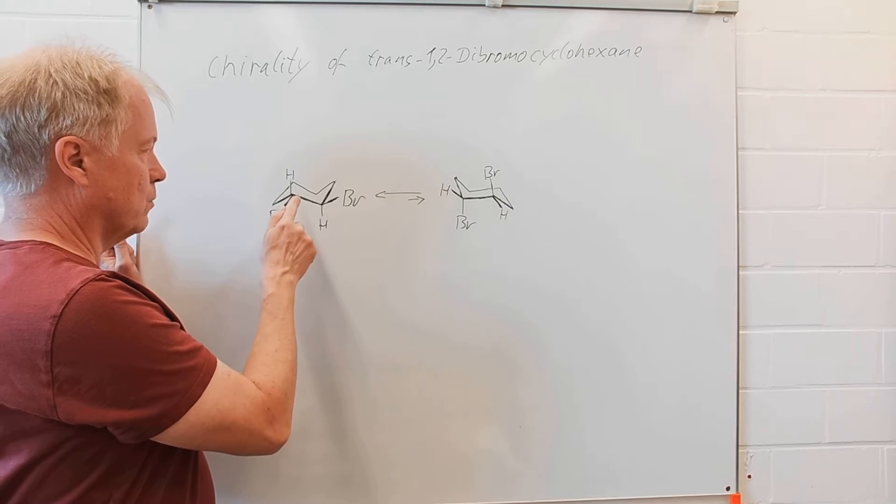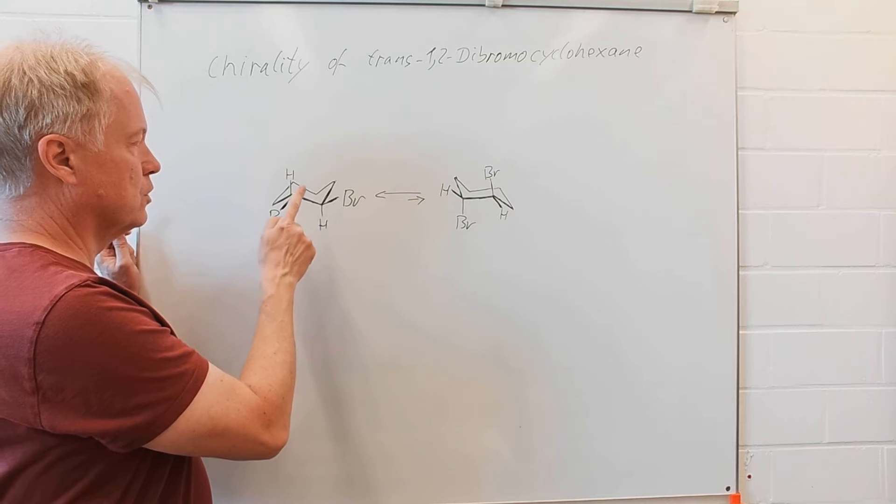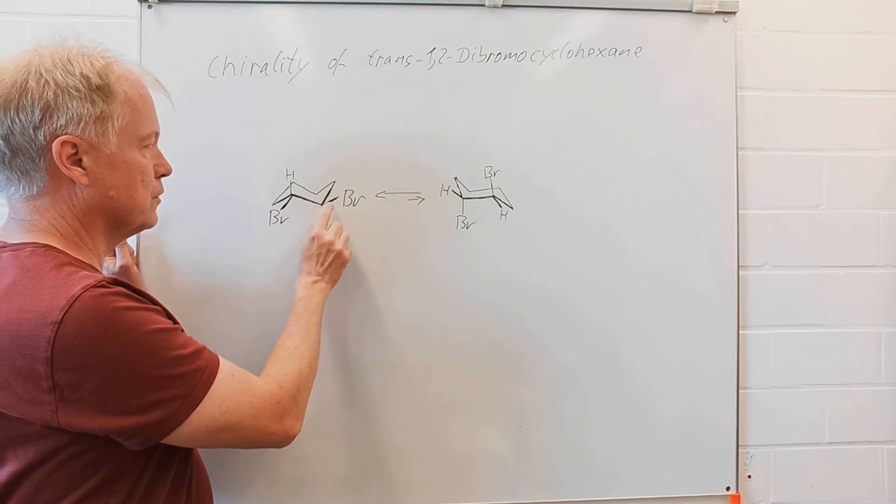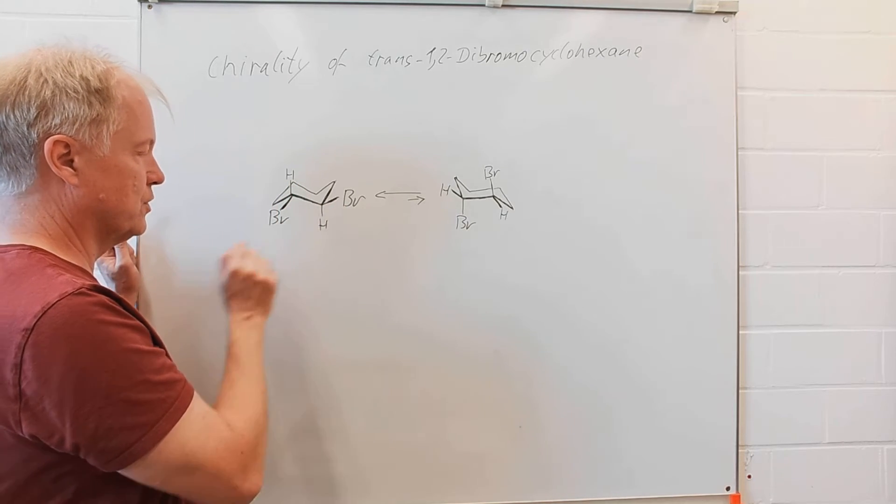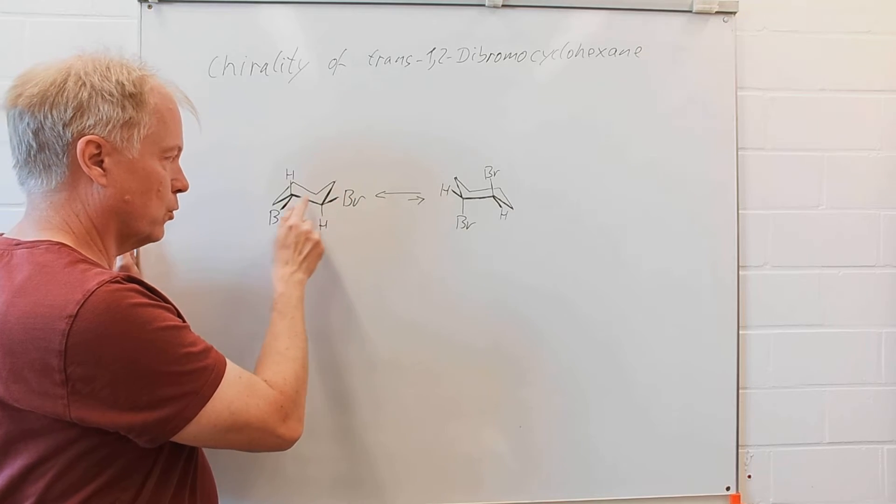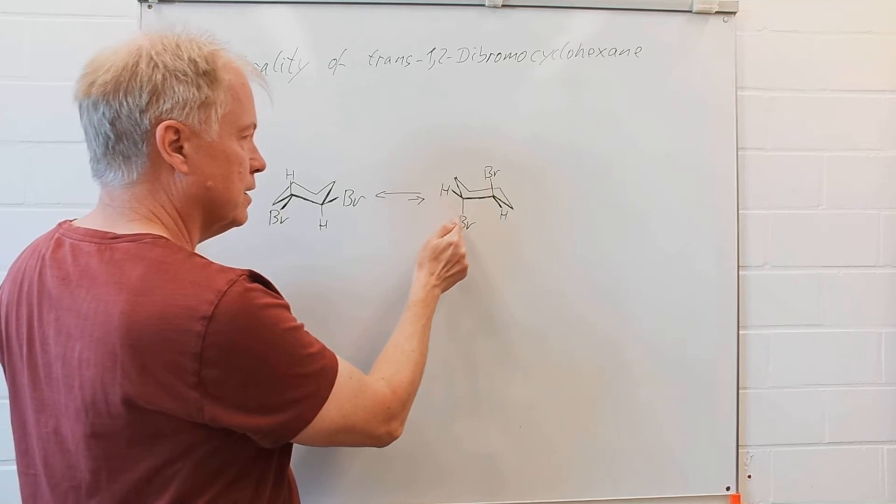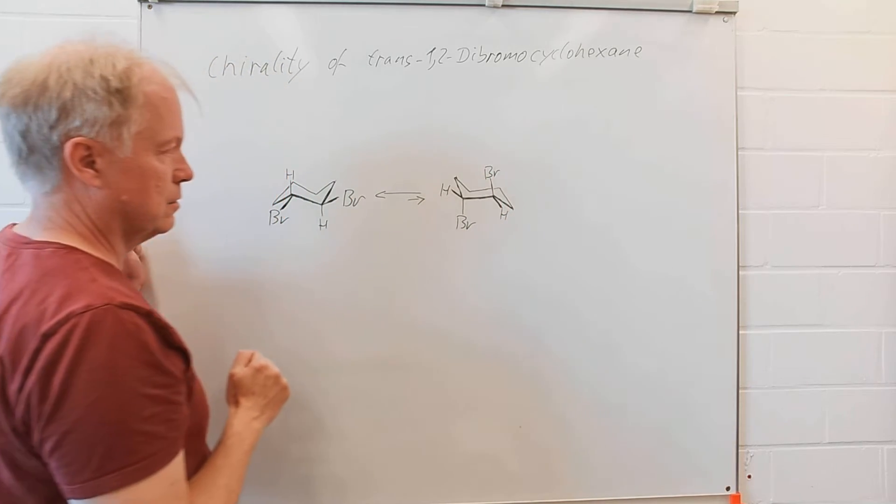Here we have one conformer in the chair conformation with the two bromo atoms in equatorial position, here in the axial position.